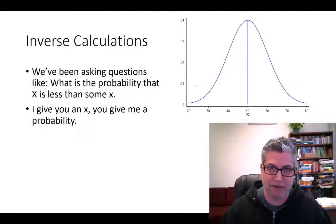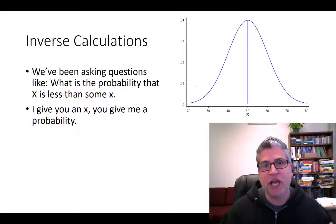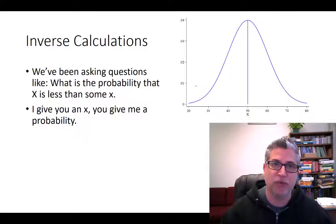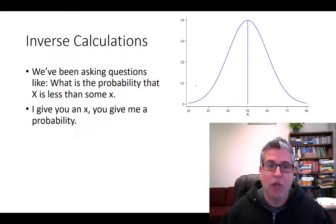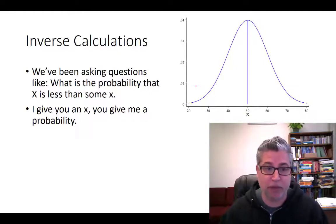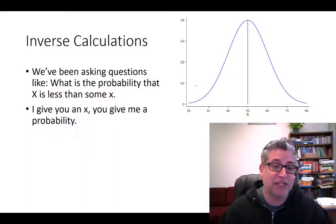So what is an inverse calculation? It's probably best to think of this in contrast to the kind of questions we've been doing up until this point. Up until now we've been asking questions of the following sort: What is the probability that some random variable is less than a particular number, or greater than a particular number? The thing is, I give you an x, and you're supposed to give me a probability.